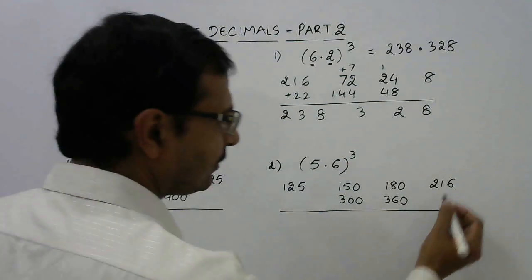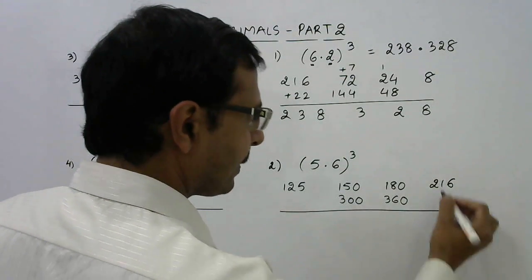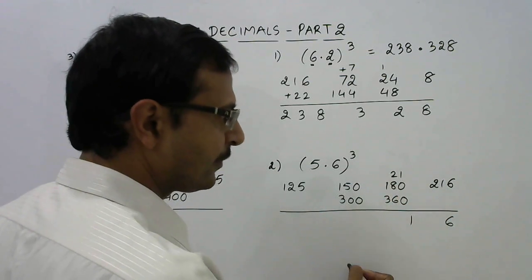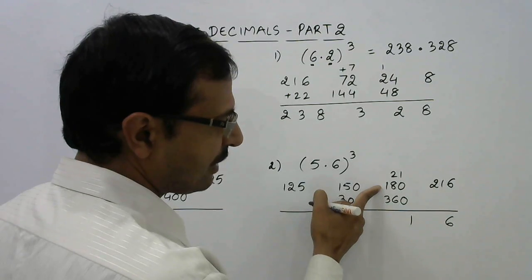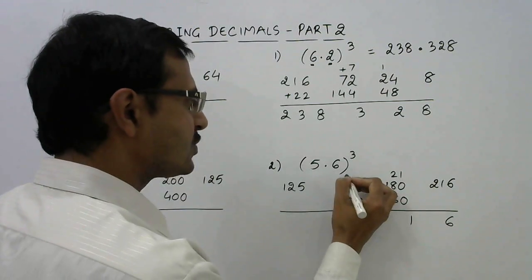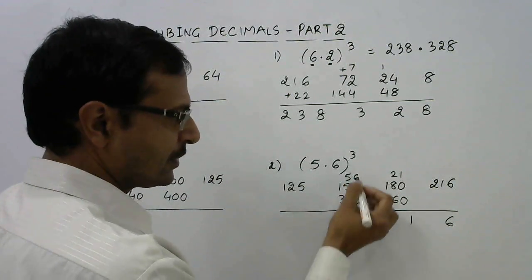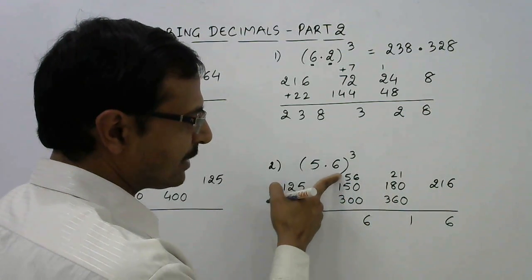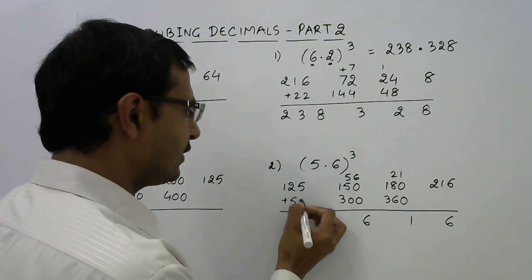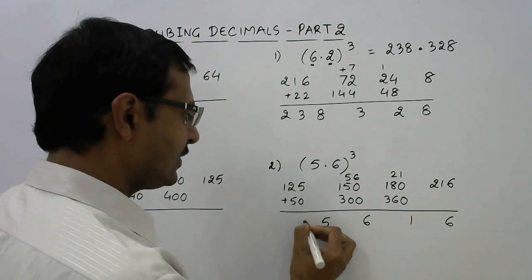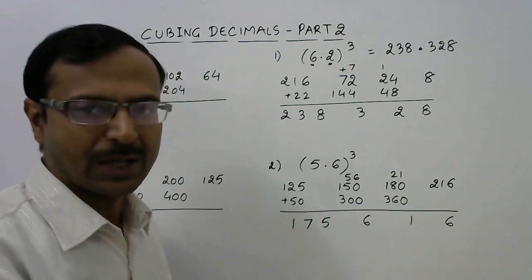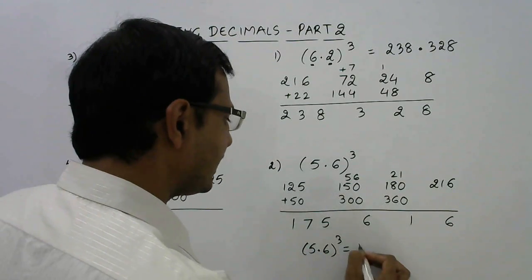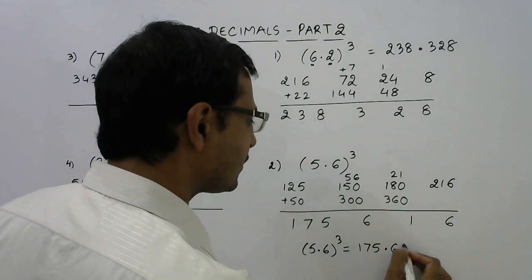So let's see. This 6 will come here. This 21 will get carried forward like this, so this unit digit 1 will come here. 36 plus 18 is 54 plus 2 is 56, so 56 will be added here. So now unit place is 6 and now 30 plus 15 is 45 plus 5 is 50, this will be added here and now 571. So the answer for the question 5.6 whole cube is 175.616.